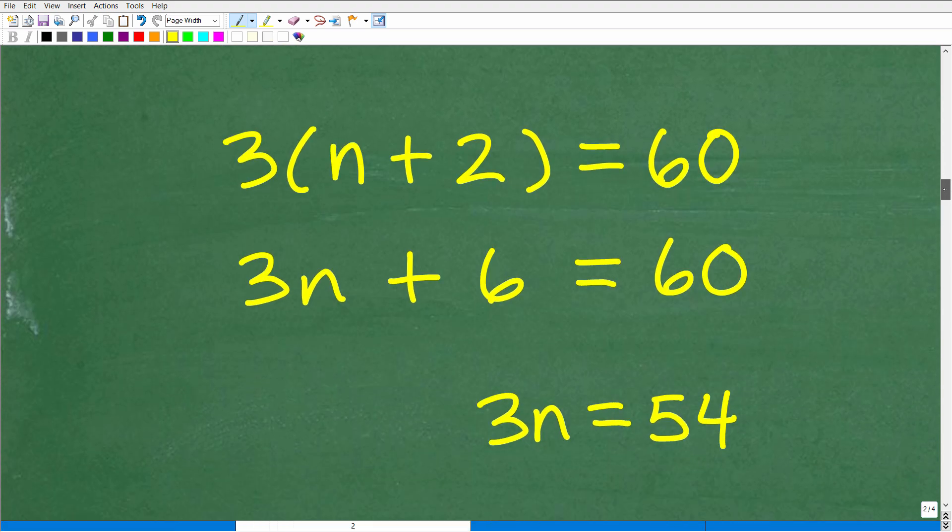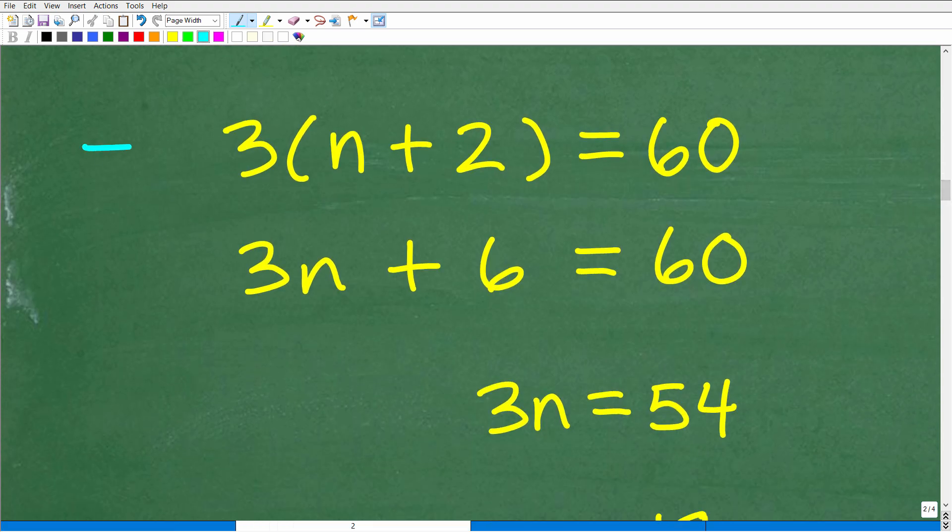All right, so again, at this point, we know that this equation here represents the problem, the verbal problem. Now, we have basically an algebraic problem to solve. So, we're going to solve this equation for n. Let's go ahead and do this now. So, here, right here, this part of the equation is an example of where we have to use the distributive property. So, we're going to take this 3, multiply it by n. So, that's 3n. And then 3 times 2 is 6.